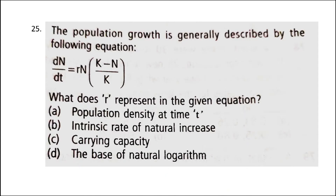Next: the population growth is generally described by the equation dn/dt = rN(K−N)/K. What does R represent in the given equation? The answer is option B: intrinsic rate of natural increase. A population growing in a habitat with limited resources shows a sigmoid growth curve. This type of population growth is called Verhulst-Pearl logistic growth, given by the equation dn/dt = rN(K−N)/K, where N is the population density at time t, r is the intrinsic rate of natural increase, and K is the carrying capacity.